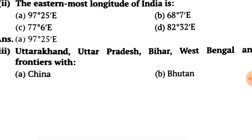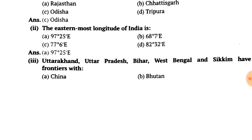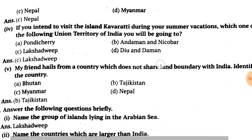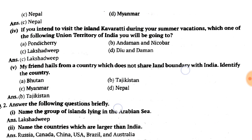The next question is: Uttarakhand, Uttar Pradesh, West Bengal, and Sikkim have frontiers with which country? Frontiers means international boundary. Uttarakhand, Uttar Pradesh, Bihar, West Bengal, and Sikkim — which country shares a boundary with all these states? The answer is Nepal. Nepal shares its boundary with all these states.